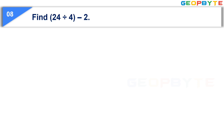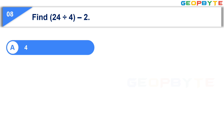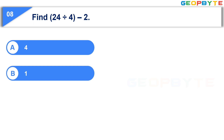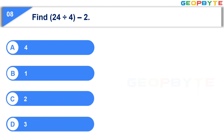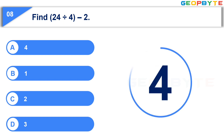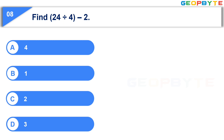Find 24 ÷ (4 - 2). Option A: 4. Option B: 1. Option C: 2. Option D: 3. Your time starts now. Your time is up and the correct answer is Option A: 4.